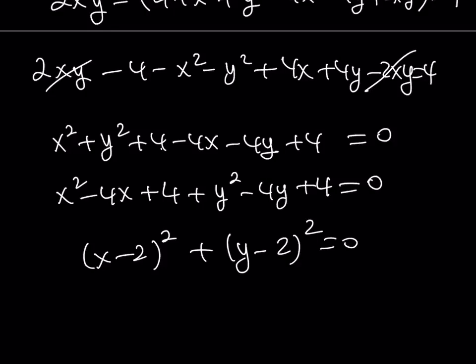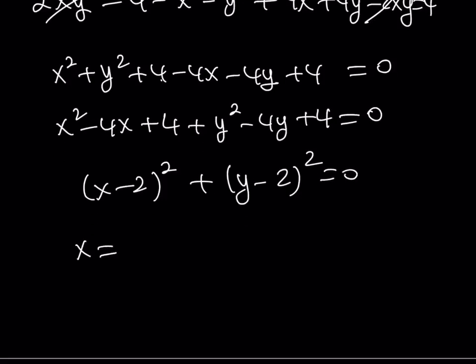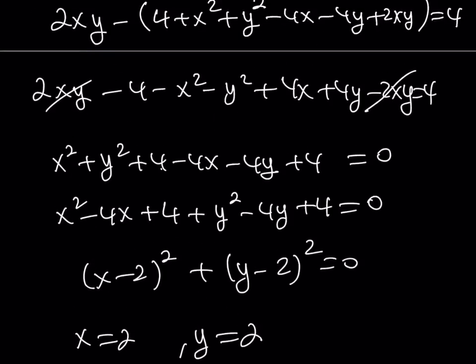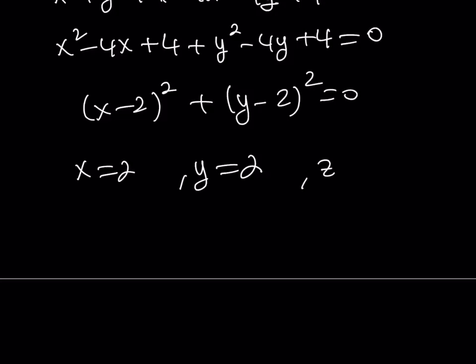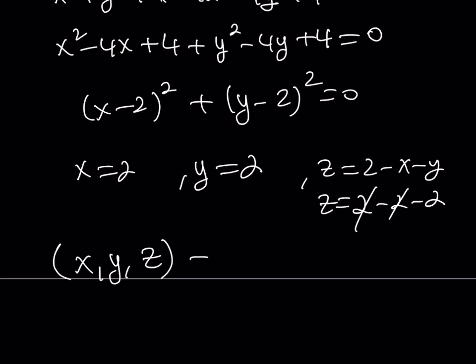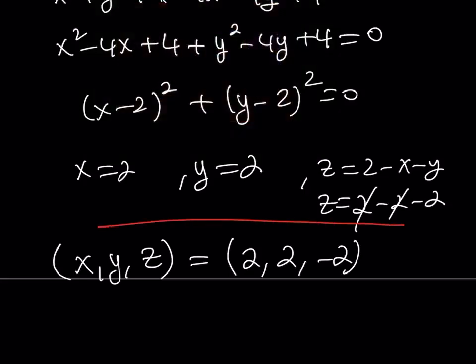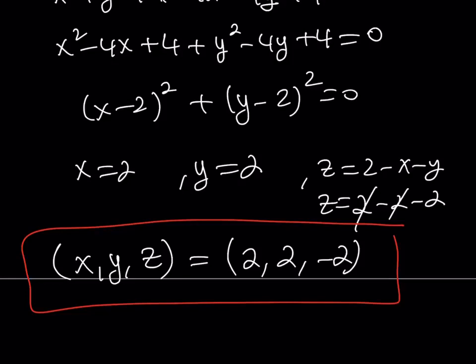A sum of squares can only be zero if the individual terms are zero. This means x equals 2 and y equals 2. Since we used z equals 2 minus x minus y, that gives z equals 2 minus 2 minus 2, which equals negative 2. Therefore, we get the same ordered triple (x, y, z) equals (2, 2, negative 2). That's my solution — this is the second method, and that's it for this video. Thank you for watching, please comment, like, and subscribe. See you in the next video!